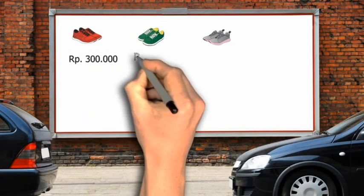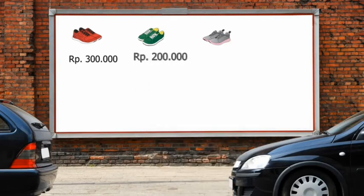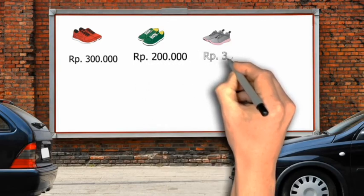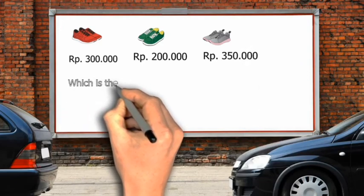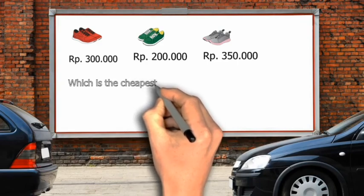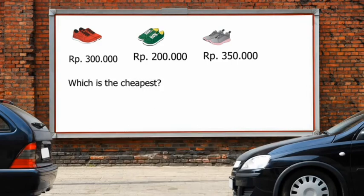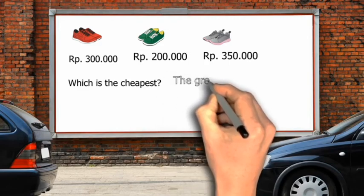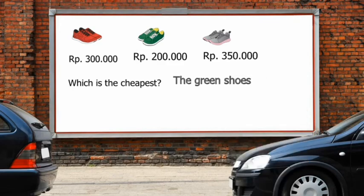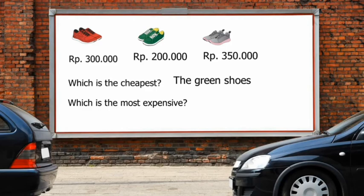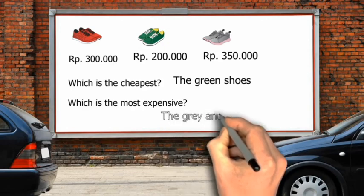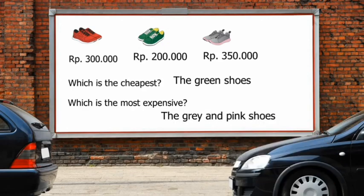You can compare among three items. Red shoes: 300,000. Green shoes: 200,000. Gray and pink shoes: 350,000. Which is the cheapest? Yes, the cheapest is the green shoes. Which is the most expensive? Yes, the gray and pink shoes are the most expensive — sepatu yang paling mahal.